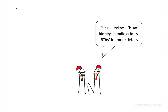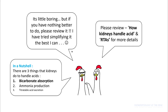Since renal tubular acidosis is a complicated topic, this would require a totally separate lecture. But in a nutshell, there are three things that your kidneys do to handle acid: first, it reabsorbs all the bicarb that is filtered in your glomeruli; second, it increases your ammonia production for acidosis; and third, it also helps excrete titratable acid.